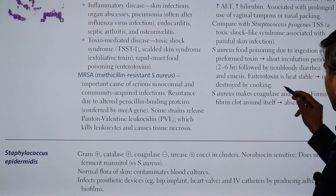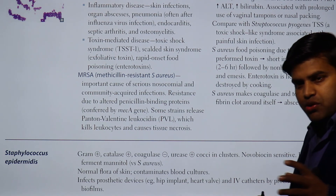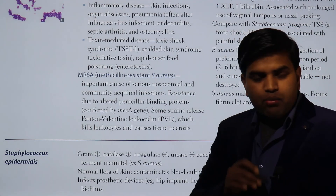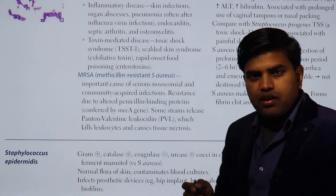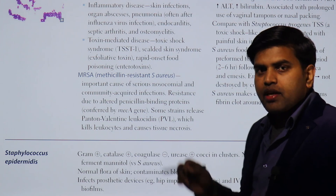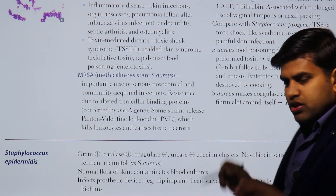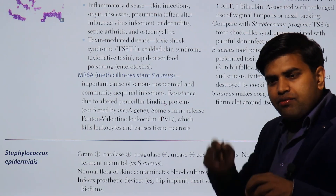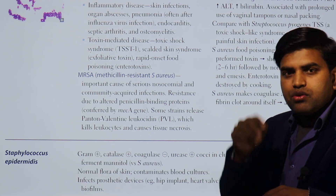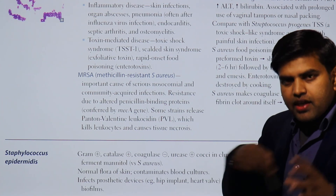S. aureus uses coagulase enzyme and toxins to form a fibrin boundary around itself, creating abscesses. Whenever you see boils, abscesses, carbuncles, or furuncles, S. aureus is the main responsible organism. The coagulase enzyme coagulates fibrin to form a clear boundary around the abscess, which is why abscesses have a well-defined wall.